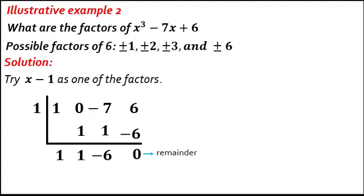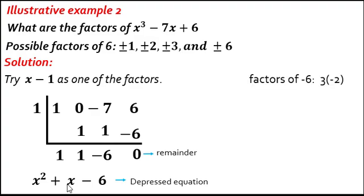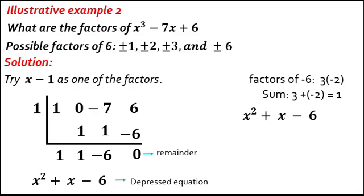The numbers in the last row are the quotient: x squared plus x minus 6. This is the depressed equation and can still be factored. To get the factors of x squared plus x minus 6, use your factoring skills by trial and error. Think of two numbers whose product is negative 6 and whose sum is 1. Those numbers are 3 and negative 2. So the factors are quantity x plus 3 times quantity x minus 2.